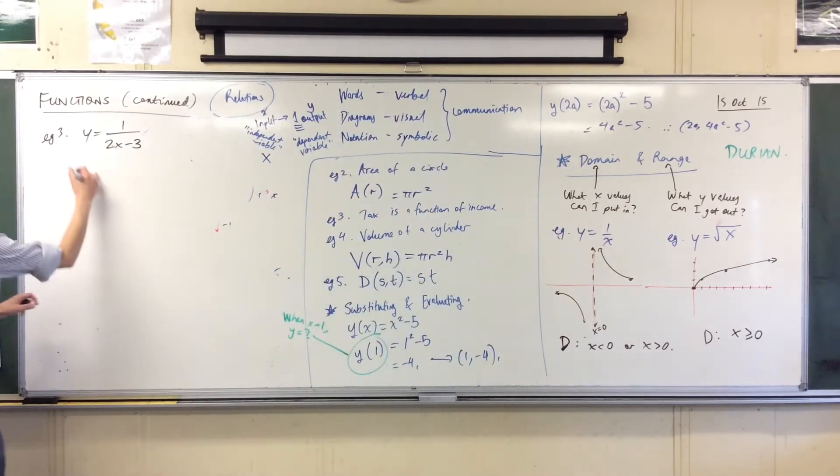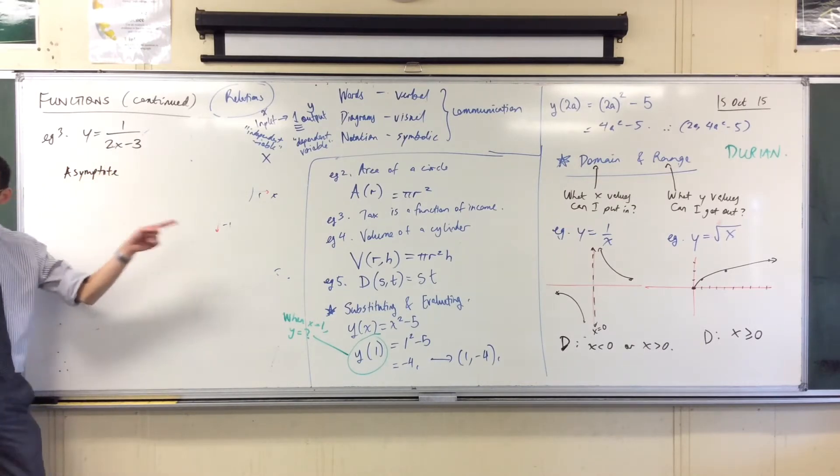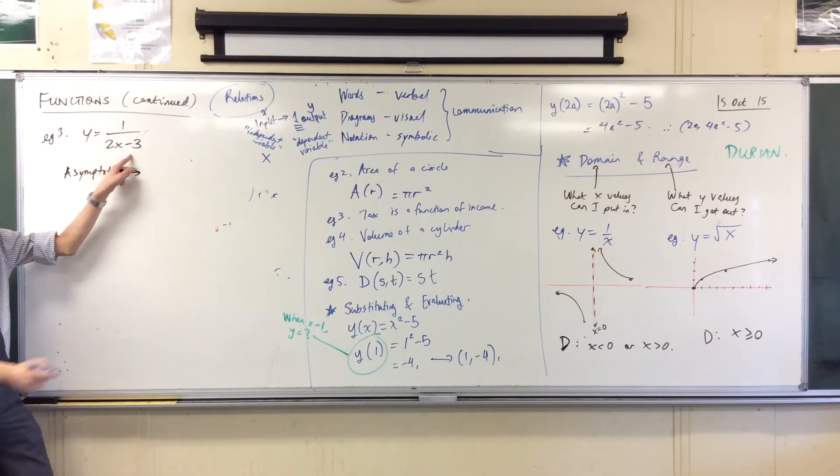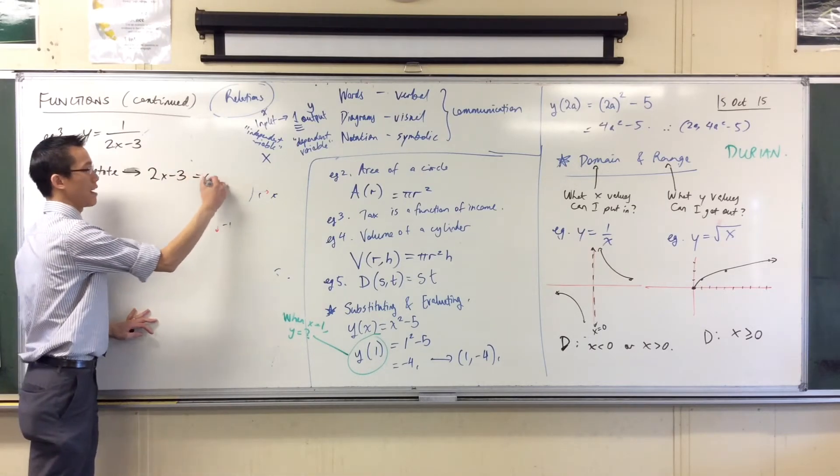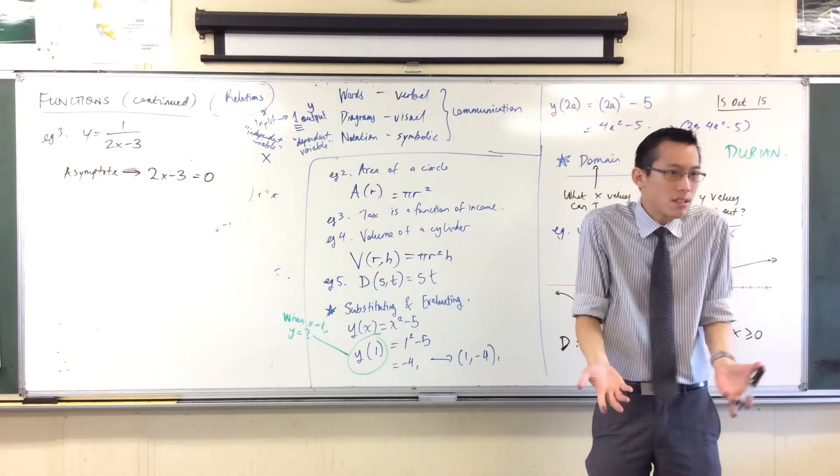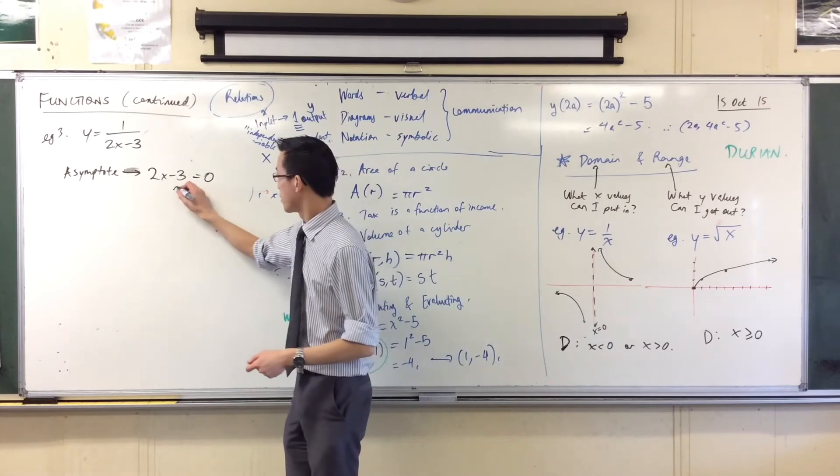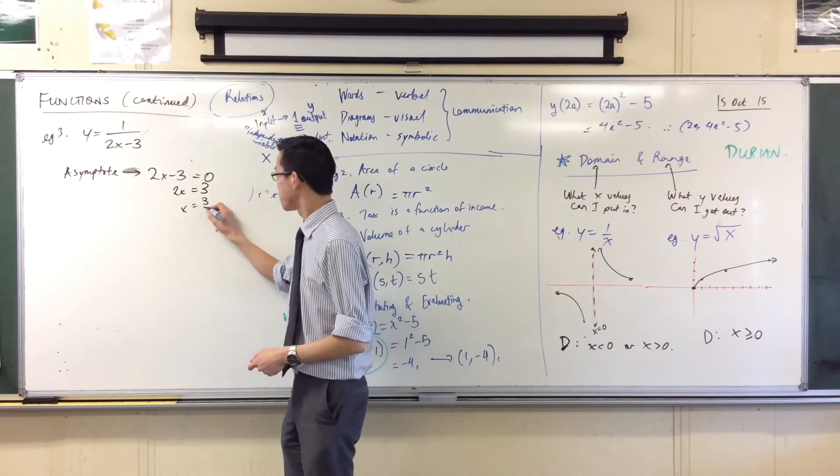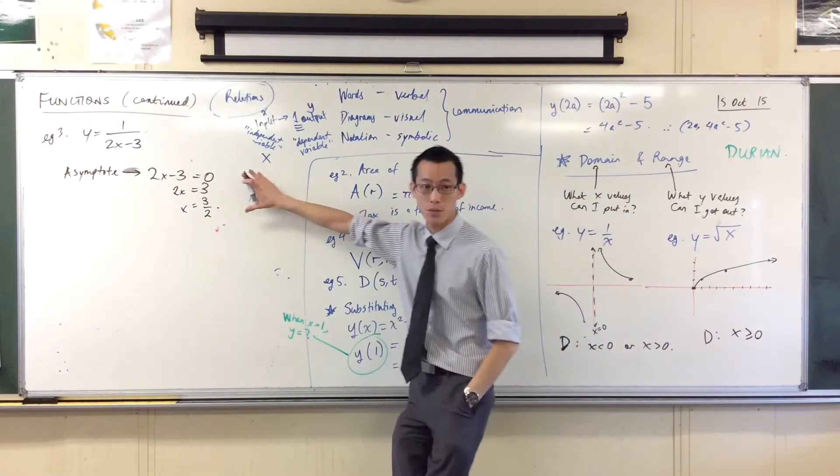So I'm going to say the asymptote, that's the value I need to avoid in this case, right? It's when, sorry, it's when the denominator, that's the denominator, right? It's when the denominator is zero, right? That's when things are going to break down for me, okay? But that's just an equation. I can solve this, right? So can you help me out? What do I do? 2x equals 3. 2x, I'll add 3 to both sides, and then? x equals 3 on 2. I'll divide. Okay. So there you go. x equals 3 on 2 is where the asymptote is.